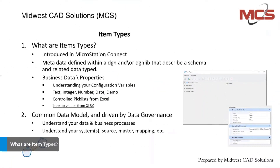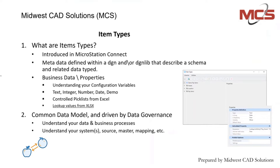What are item types? They were first introduced in MicroStation Connect Edition and they're really the replacement to the tag libraries that existed in the V8i series before that. Item types are a way to contain metadata in your file and assign that metadata to elements, to models, to files.